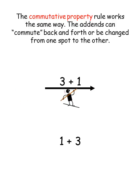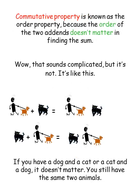So, 3 plus 1 is the same as 1 plus 3. Commutative Property is also known as the Order Property, because the order of the two add-ins doesn't matter in finding the sum. Wow! That sounds complicated. But it's not. It's like this.